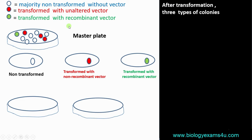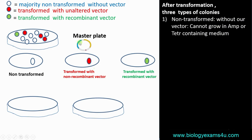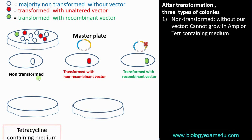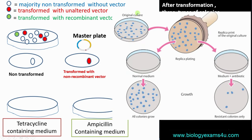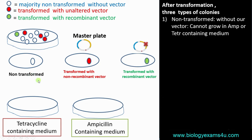After a transformation experiment we will get three types of colonies: first, the majority are non-transformed without our vector; second, transformed with non-recombinant vector where the vector remains intact without our gene of interest; and third, transformed with recombinant vector where insertional inactivation has occurred and the gene of interest is present. We need to select these colonies transformed with recombinant vector using replica plating — transferring colonies onto tetracycline-containing medium and ampicillin-containing medium.